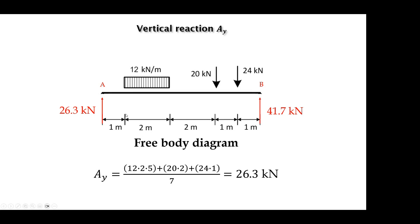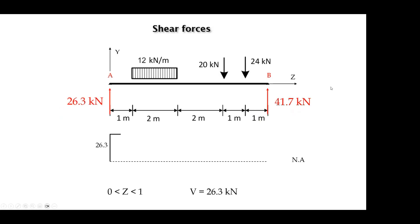When I have the reactions, the problem asks for the shear force diagram, then the bending moment diagram, then the location and value of the maximum moment. We start calculating shear forces going interval by interval. For the interval from 0 to 1, where Z is between 0 and 1, the summation of shear forces to the left is just the reaction 26.3 kN, so the shear force in this interval equals 26.3 kilonewtons.